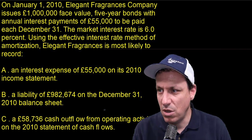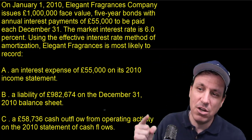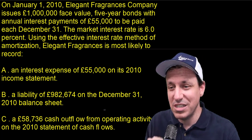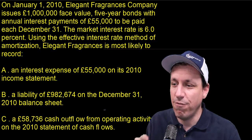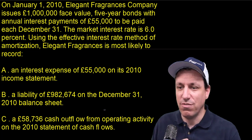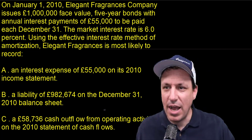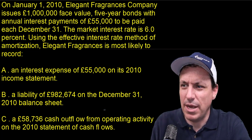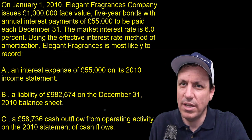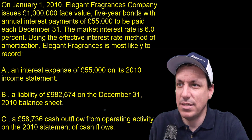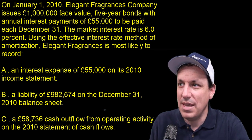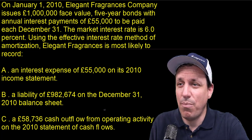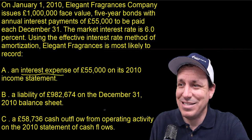Option A: an interest expense of $55,000 on its 2010 income statement. Well, $55,000 on a million is not 6% — that's 5.5%. The 6% on the million would be about $60,000, and it's not that. So we know the bond is not issued at par, and as a result, the interest expense is not going to be $55,000. We can eliminate answer A.